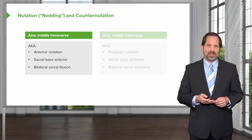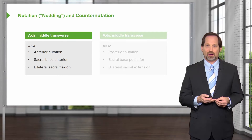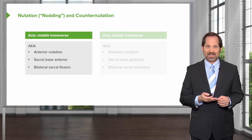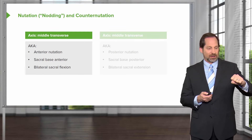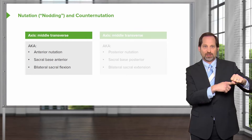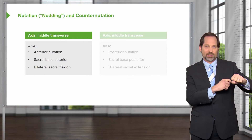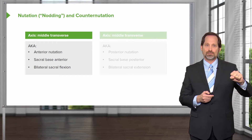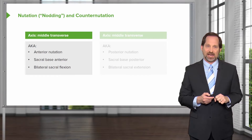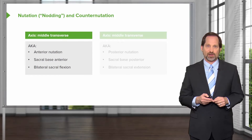Another important term is nutation. Nutation is the nodding that occurs along the middle transverse axis. In anterior nutation, the sacrum moves anteriorly and the coccyx moves posteriorly, when the sacral base is moving anterior, and you're going to have bilateral sacral flexion. That's motion along the middle transverse axis.